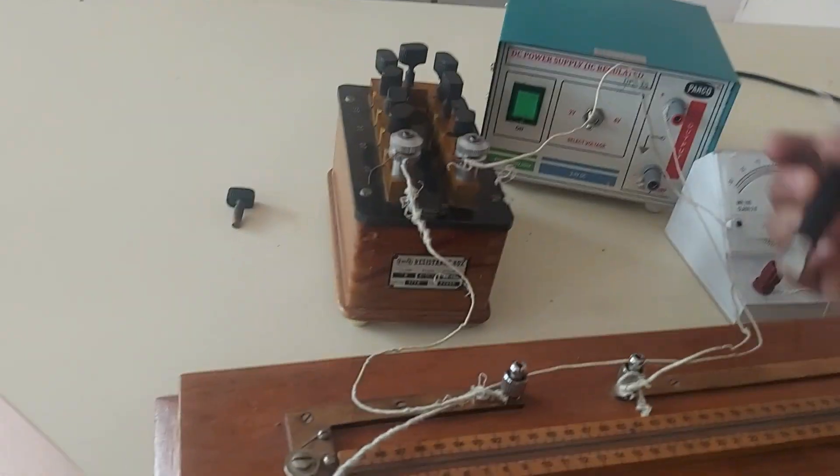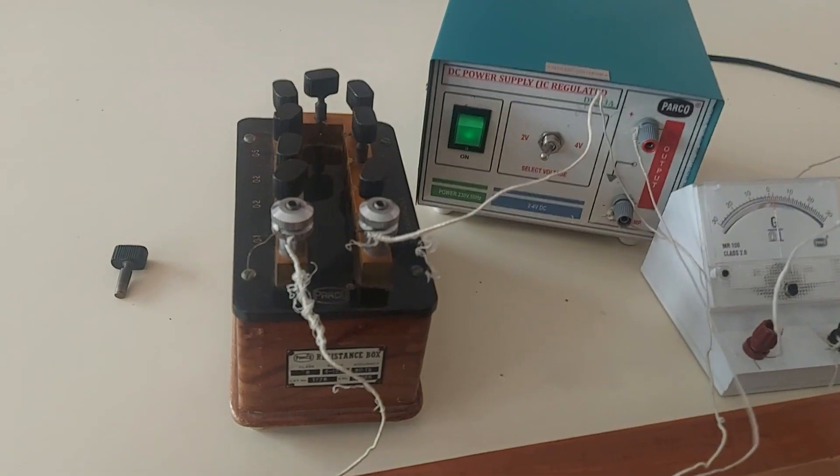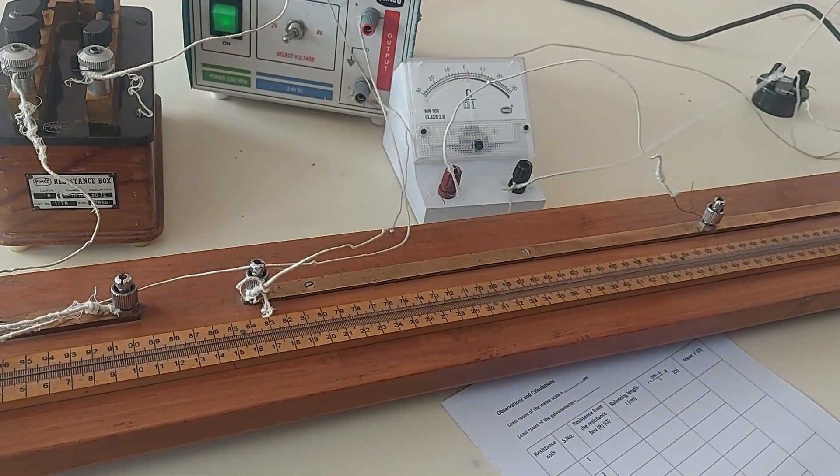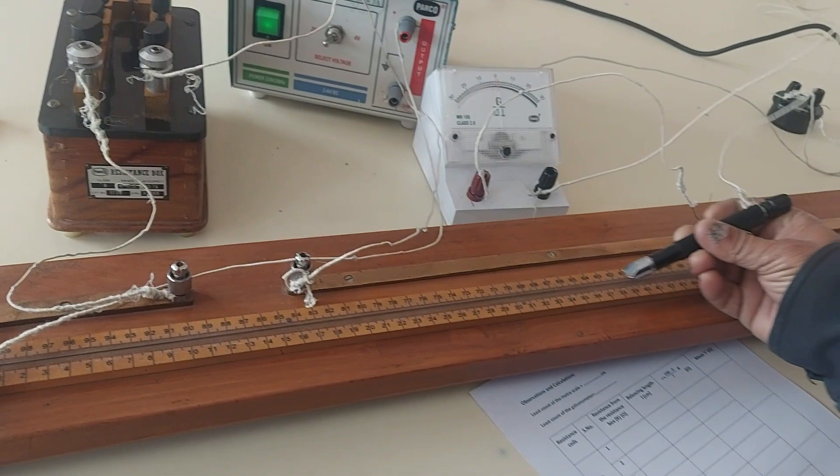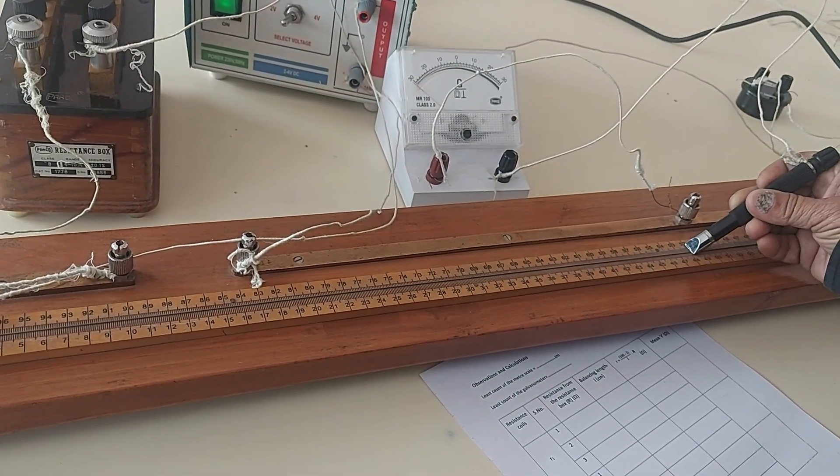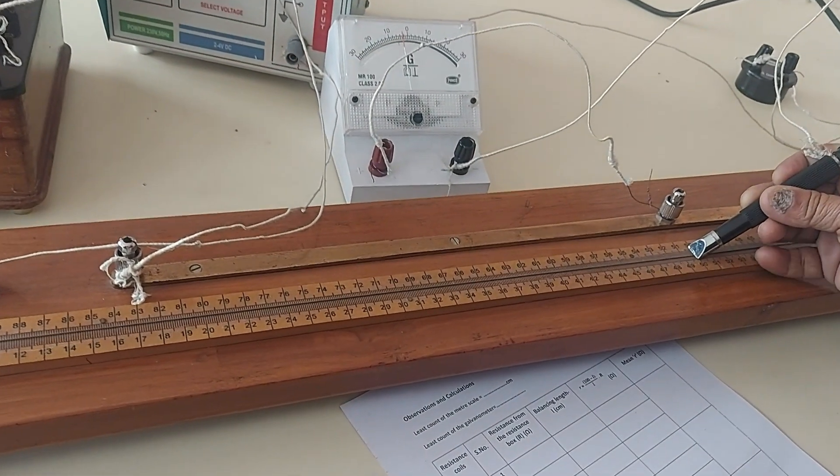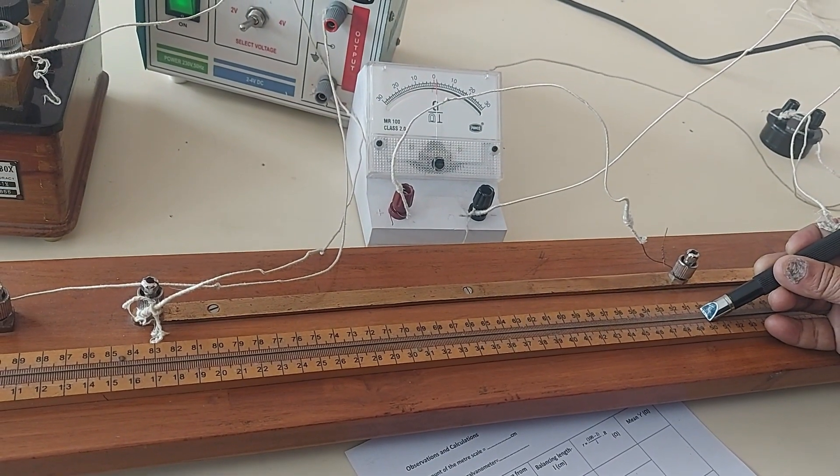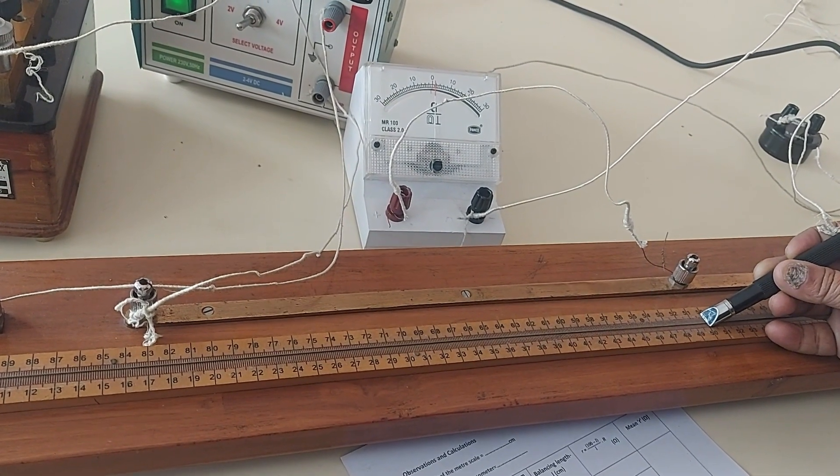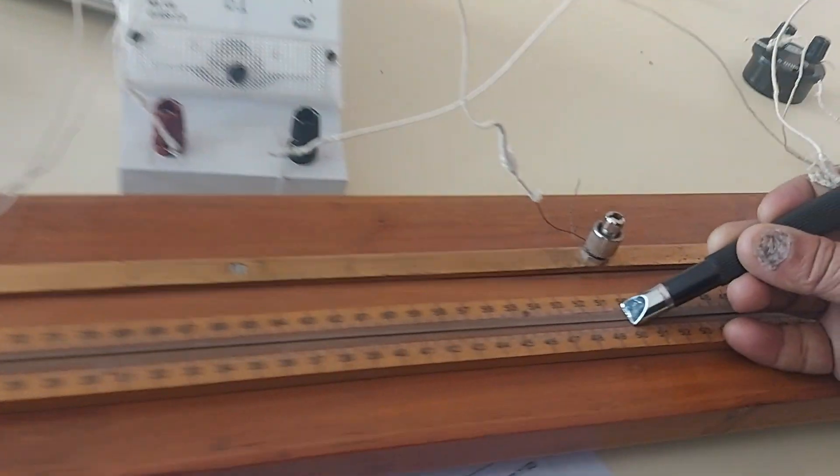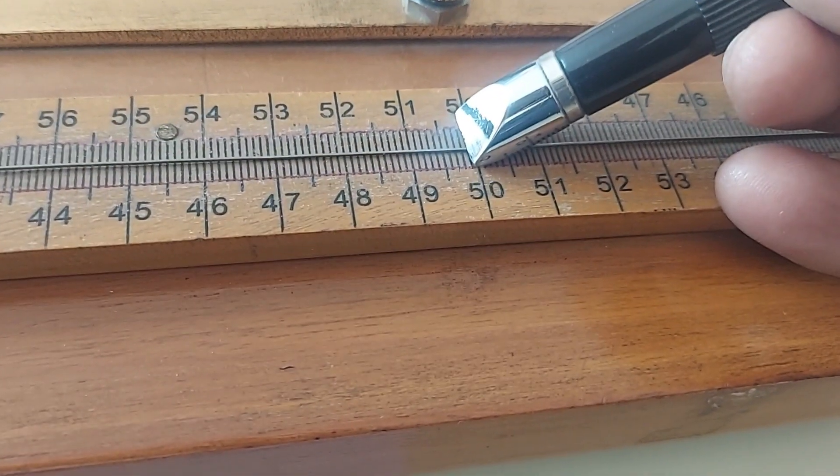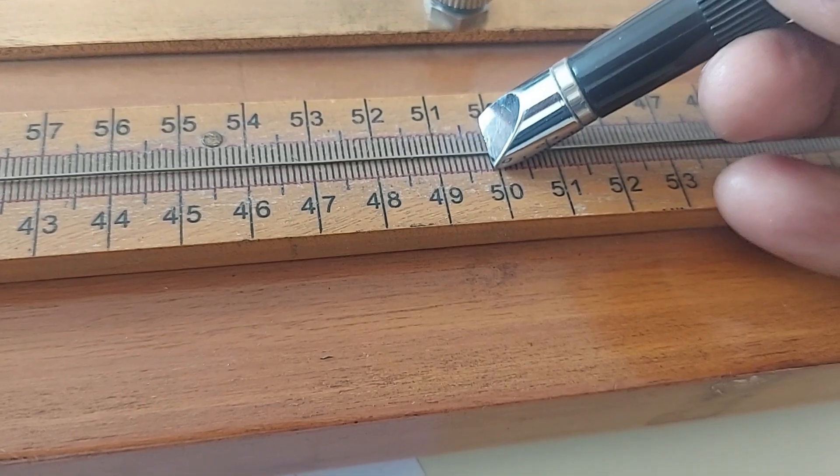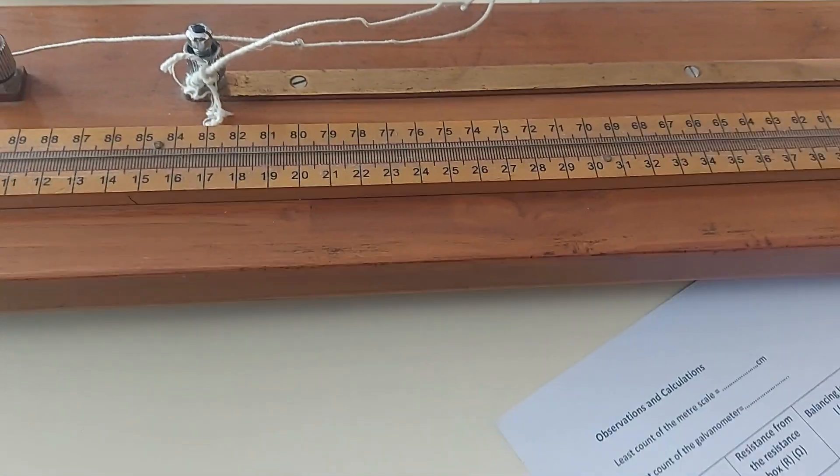We will take out 5 ohm from the standard resistance box and locate the balance point. By checking the two ends of the meter bridge, the deflection should be in opposite direction. Now gradually move the jockey over the wire so that the galvanometer needle is at zero. Take the reading: 49.9. That is our first reading.